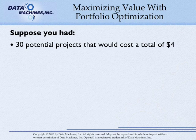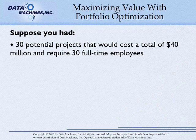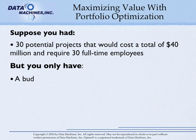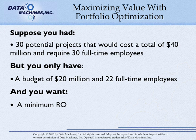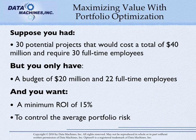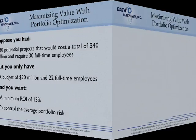Suppose you have 30 projects that would cost a total of $40 million and require 30 full-time employees, but you only have a budget of $20 million and 22 full-time employees. And what if you want a minimum ROI of 15%? And what if you want to control the average portfolio risk?